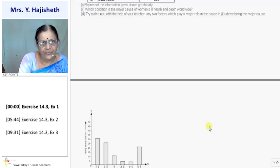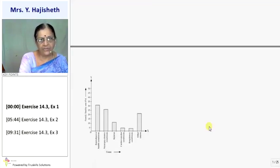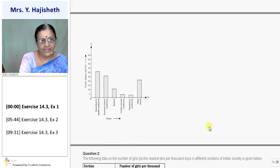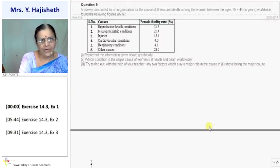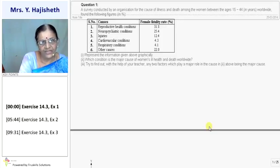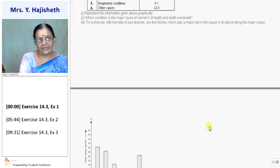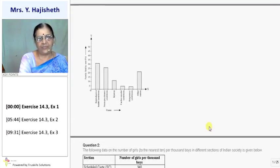Second question, which condition is the major cause? Right? So which condition is the major cause? You see, the bar with highest height is what? First cause. Due to reproduction problem. Right? Reproductive health condition. Uska rate hai 31.8 and it is highest. So this bar is having a highest height. So major cause of death is reproductive condition.